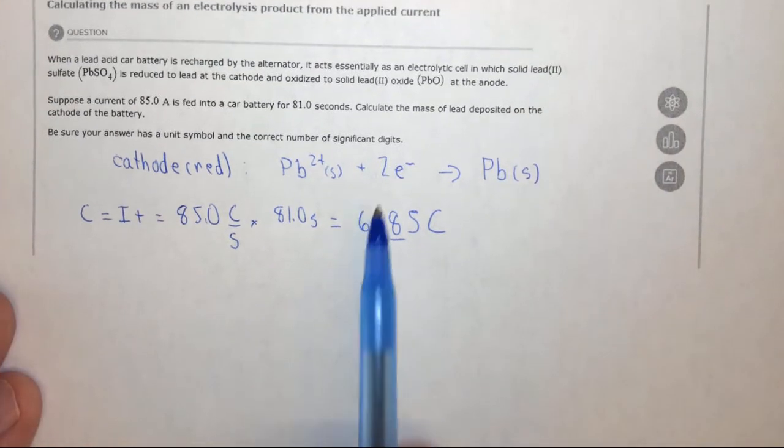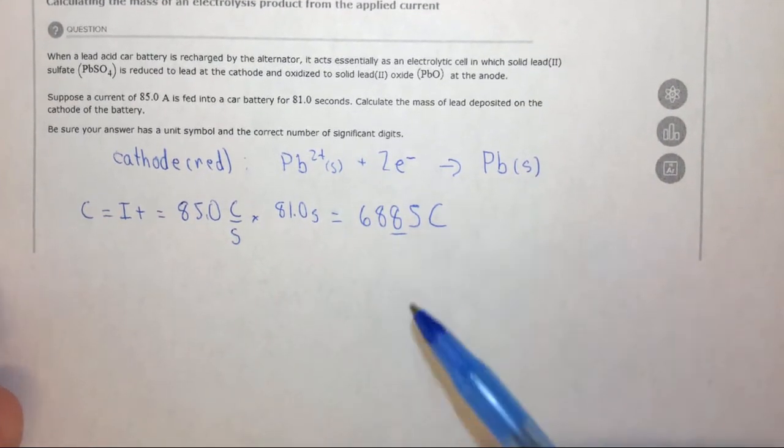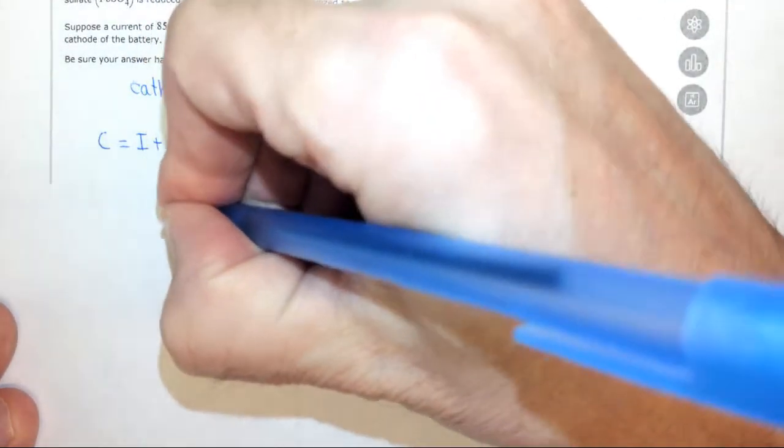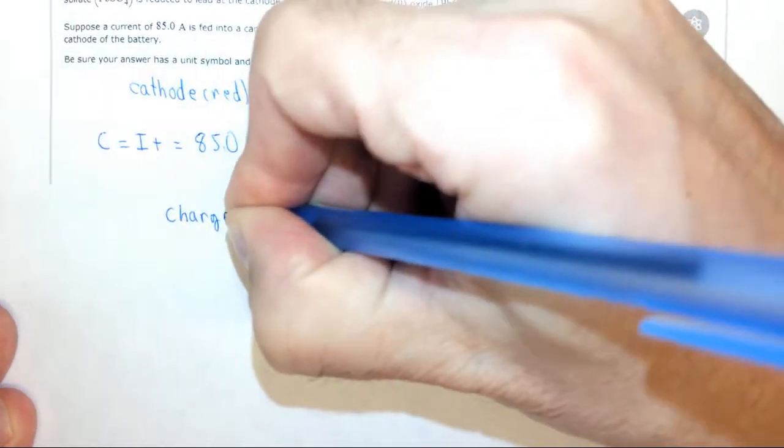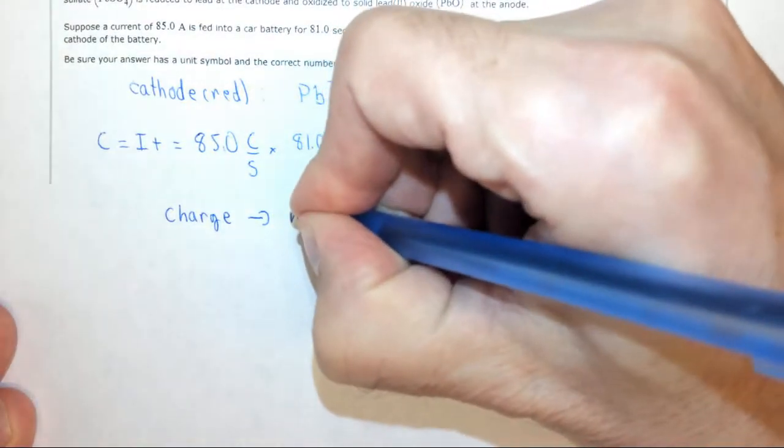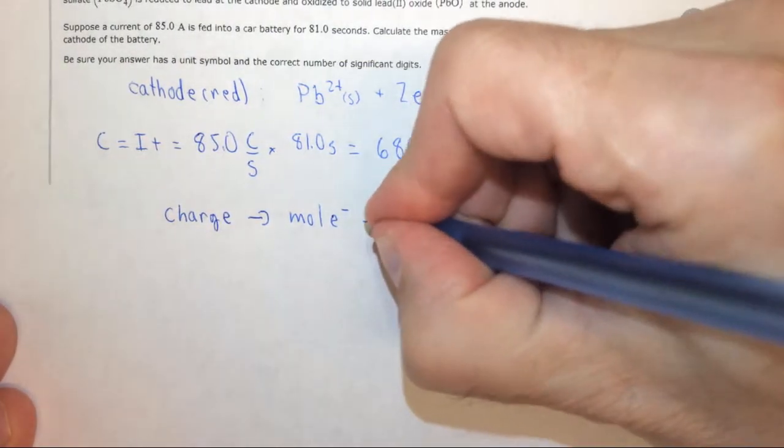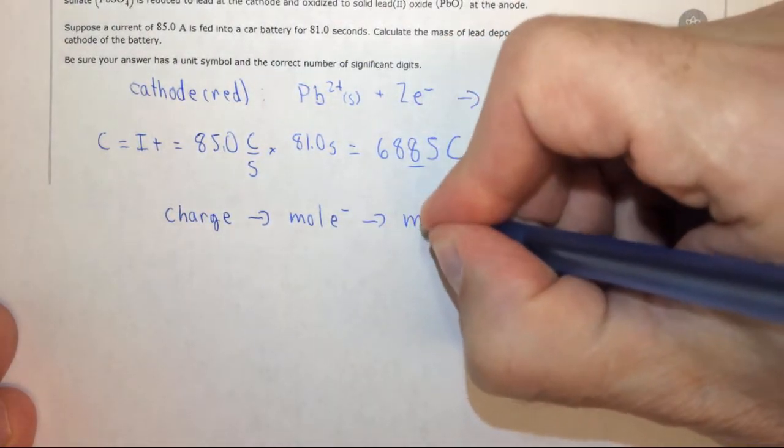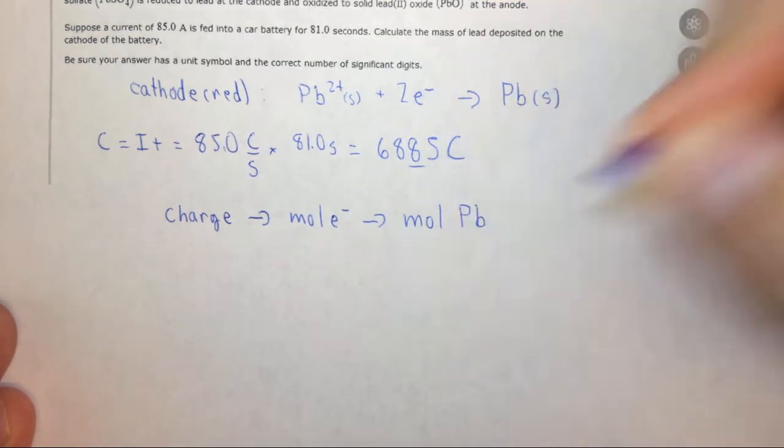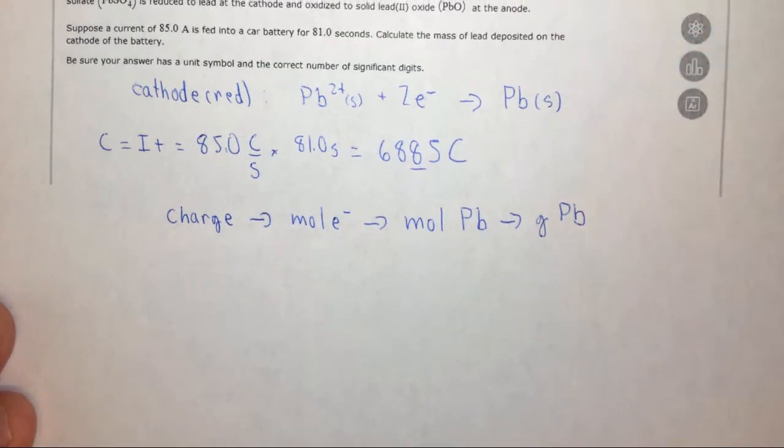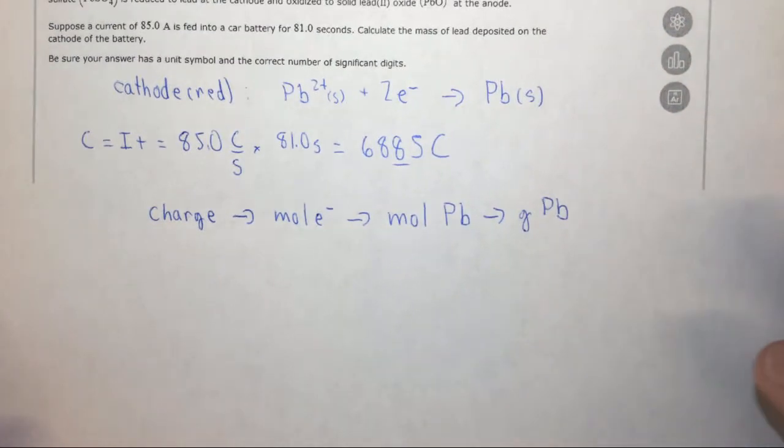We can now, with the balanced chemical equation, convert this to a mass of lead, believe it or not. What we want to do is we want to take the charge, we want to convert the charge to moles of electrons using Faraday's constant. Then using the balanced chemical equation, once we have moles of electrons we can find moles of lead, and then using a periodic table we can convert from moles of lead to grams of lead. So dimensional analysis at the beginning of the course, and dimensional analysis again at the end of the course.